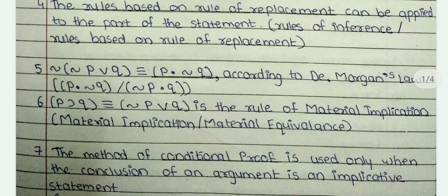Fifth: negation negation P horseshoe Q triple bar dash — according to De Morgan's law, the answer is P negation Q. Sixth: P horseshoe Q triple bar negation P horseshoe Q triple bar negation P horseshoe Q is the rule of dash. The answer is material implication.